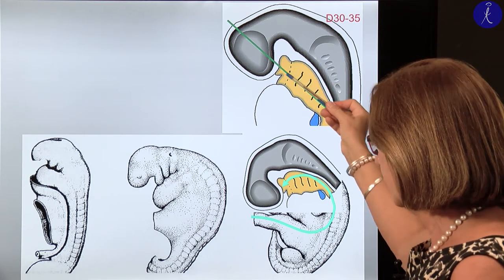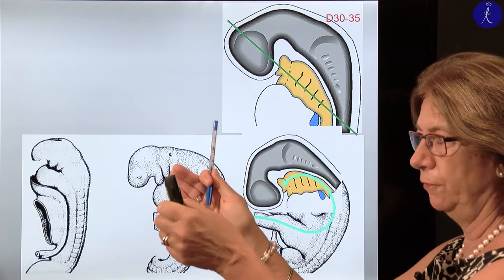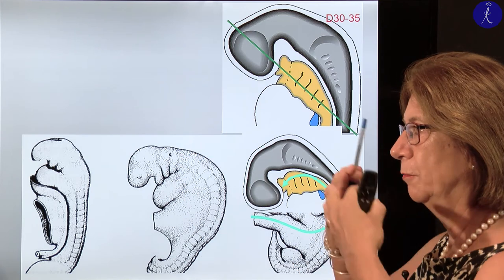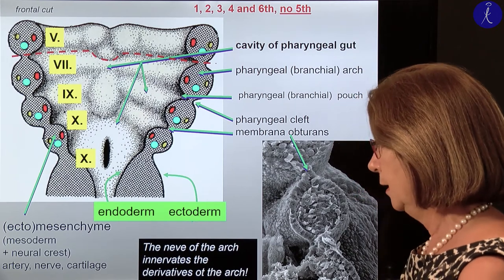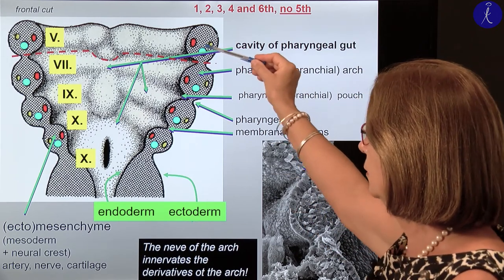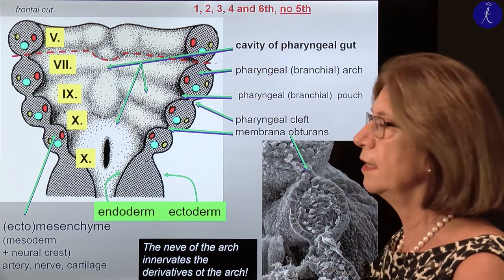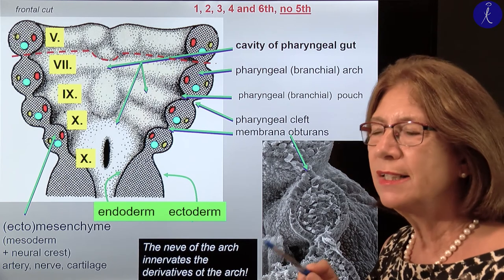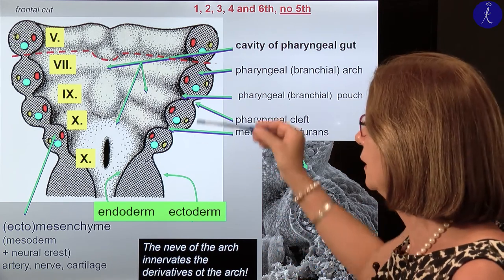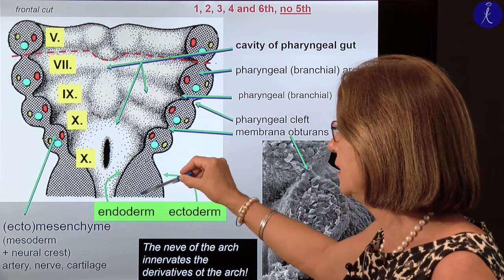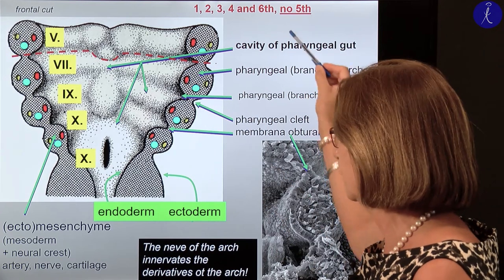If we cut it and lift off the anterior part and look at the inner surface from the inside like a shield, we would see the cut of the pharyngeal arches on the edge. All together by number we have six arches, but the fifth is missing. So we have only five arches, numbered one, two, three, four, and six — there is no fifth pharyngeal arch.